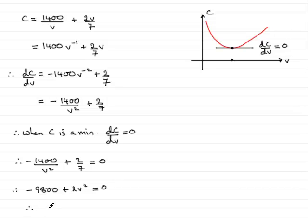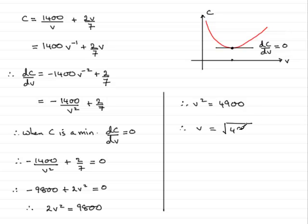Rearranging this, we've got 2V squared equals 9800. And then we can divide both sides by two, so that means that V squared is equal to 4900. Take the square root to give us V, square root of 4900. That's going to be 70. So therefore, V equals 70.